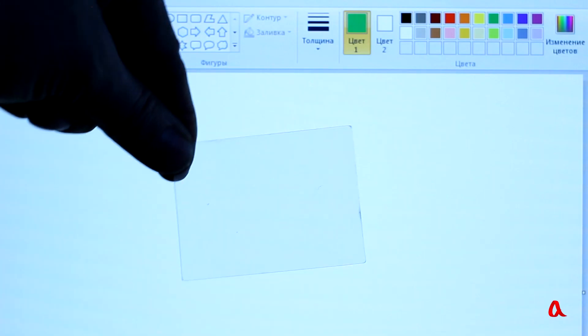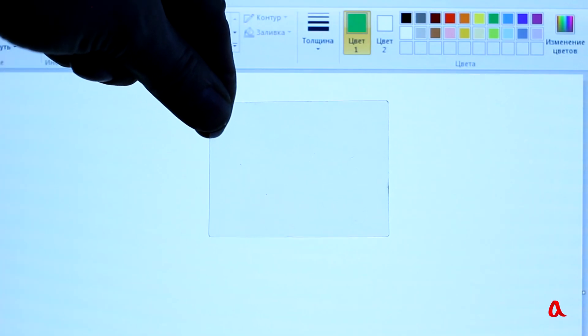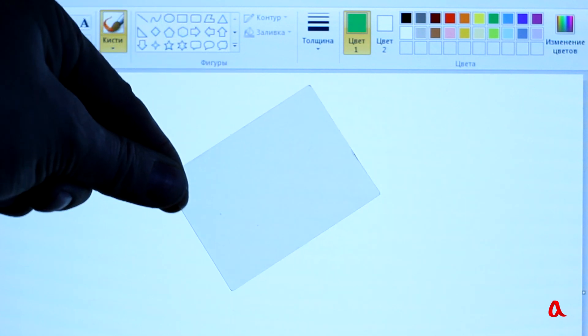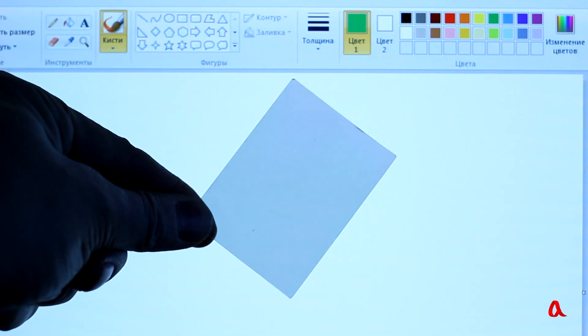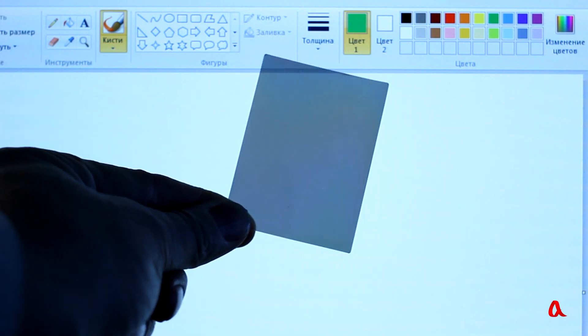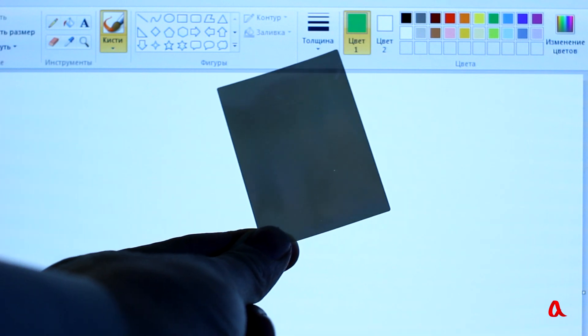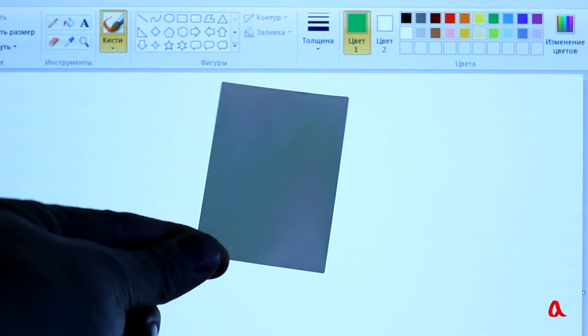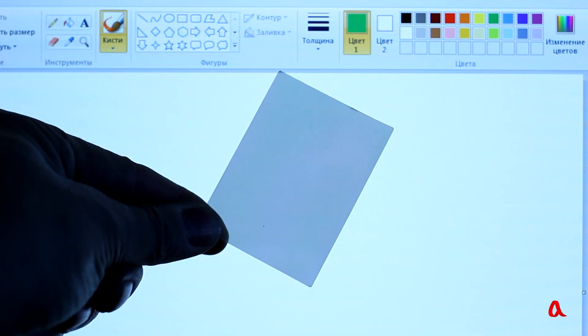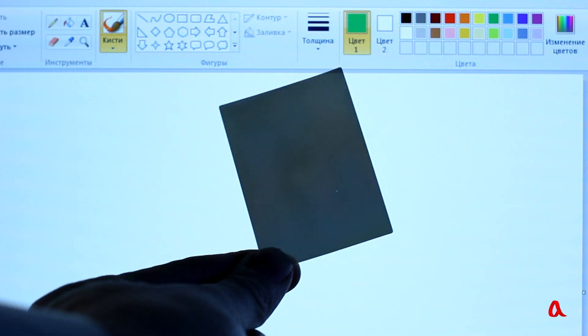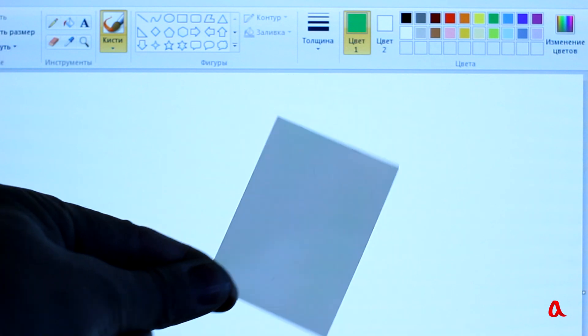Let's make another version of this experiment. This transparent film is taken from a cell phone screen. Let's look through it at the computer screen covered with the same kind of film. Again in a certain position of the two films there is a noticeable attenuation of light, although not as strong as with light filters.